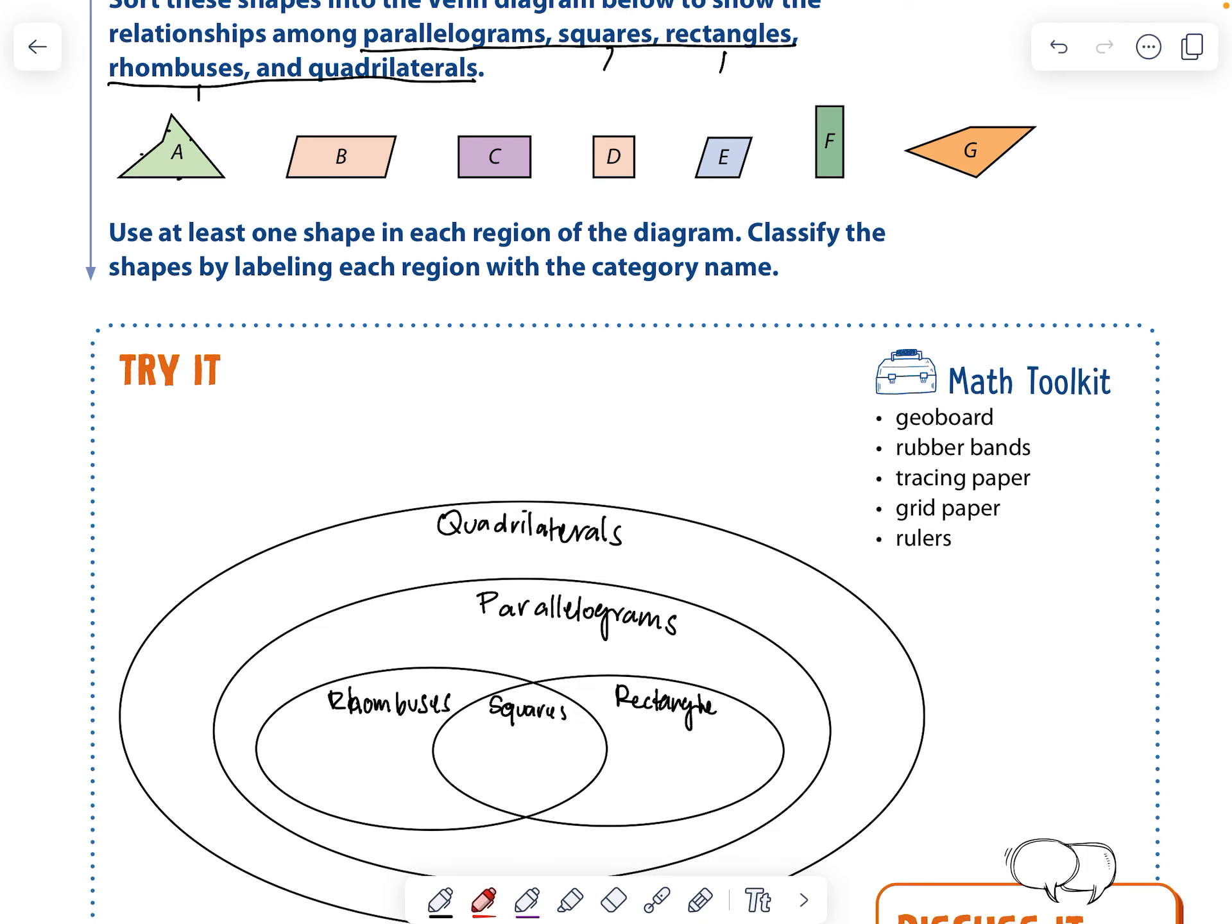Okay. The next part of this assignment is that we need to have at least one shape in each region. So we're going to look at these. We're going to first pick out the square. Okay. Shape D is clearly the square. So we're going to put that in there. We're going to find any rectangles, which I find C and F. So I'm going to put C and F. Okay. Then we're going to find any rhombuses, which I only see one because rhombuses have sides of equal length. So I only see one and that's E.